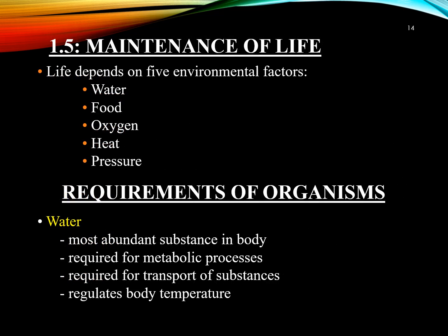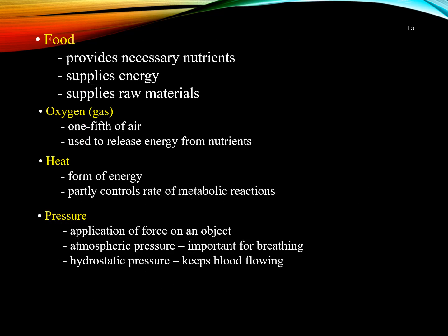Maintenance of life depends upon five environmental factors: water, food, oxygen, heat, and pressure. Water is the most abundant substance in the body, required for metabolic processes, transport of substances, and regulation of body temperature. Food provides necessary nutrients, supplies energy, and supplies raw materials. Oxygen, which makes up one fifth of air, is used to release energy from nutrients. Heat is a form of energy that partially controls the rate of metabolic reactions. Pressure is the application of force on an object — atmospheric pressure is important for breathing, and hydrostatic pressure keeps blood flowing.